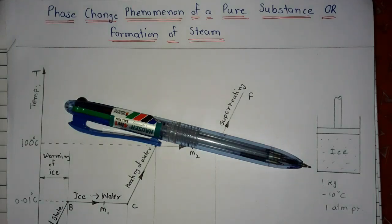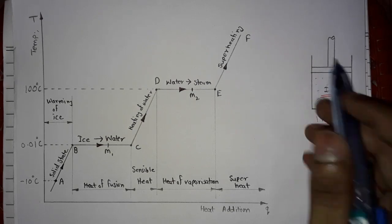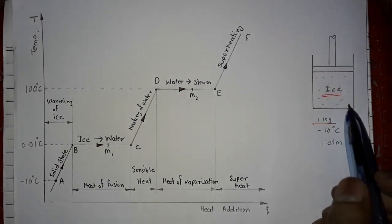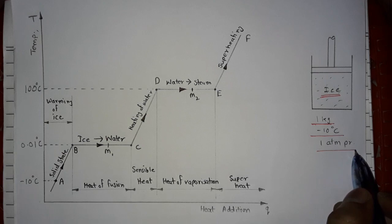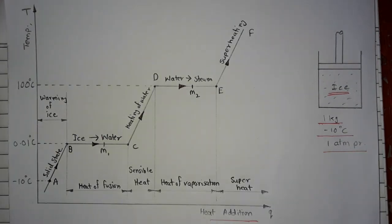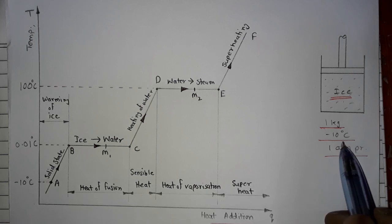Hello friends, welcome to my channel. In this video I am going to explain the phase change phenomenon of a pure substance, or formation of steam. Suppose this is a frictionless piston-cylinder arrangement and it contains ice of mass 1 kg at minus 10 degree Celsius and 1 atmospheric pressure. We will see the phase change phenomenon using a temperature versus heat addition graph.